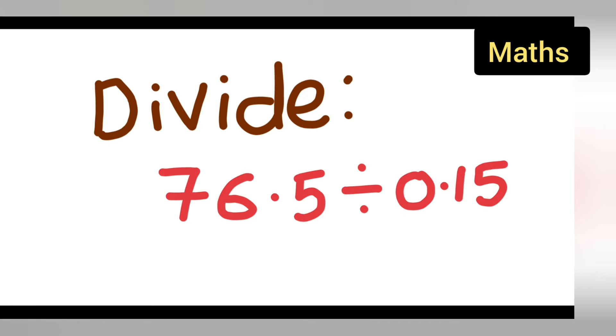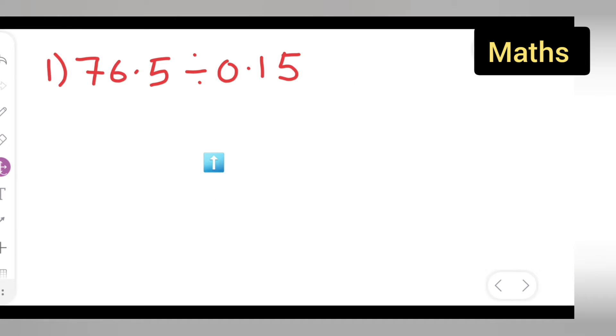Welcome for today's class of mathematics. In today's class, let's see today's question: divide 76.5 by 0.15. Let us see how to divide these numbers with a decimal point. First, you can take down the question: 76.5 divide by 0.15.